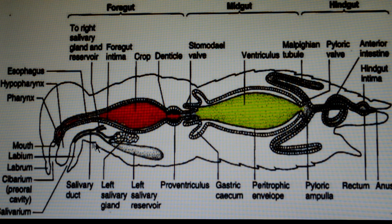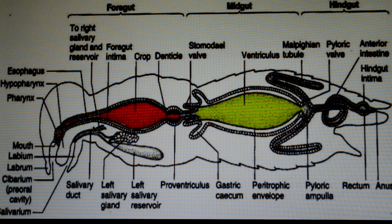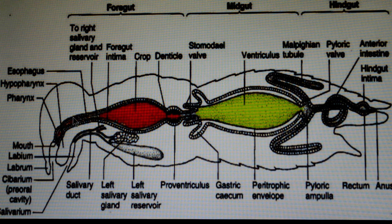These are all the salivary glands and these are all the mouthparts. Looking at the digestive system parts, the first part is the pharynx, which is involved in ingestion and passage of food particles to the esophagus. The esophagus is a tube-like structure which receives food from the pharynx and passes it on to the crop.